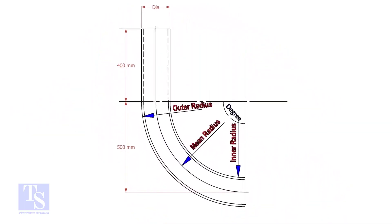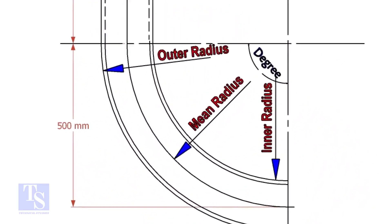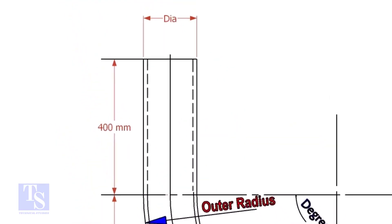To calculate the required length of a pipe to make a bend, we need to know the bend radius, the included degree, and the diameter of the pipe.